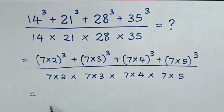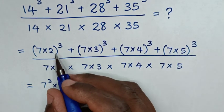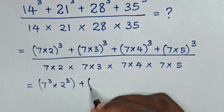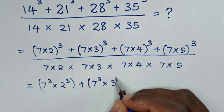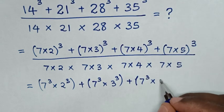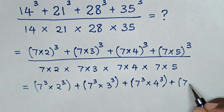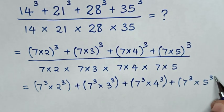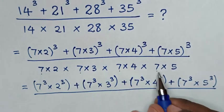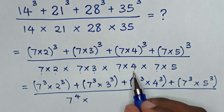Expanding the cubes inside the brackets: the numerator becomes 7 power 3 times 2 power 3, plus 7 power 3 times 3 power 3, plus 7 power 3 times 4 power 3, plus 7 power 3 times 5 power 3. The denominator is 7 times 7 times 7 times 7, which is 7 power 4, times 2 times 3 times 4 times 5.